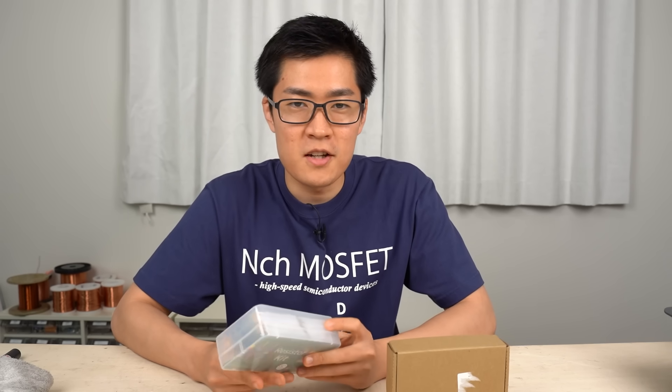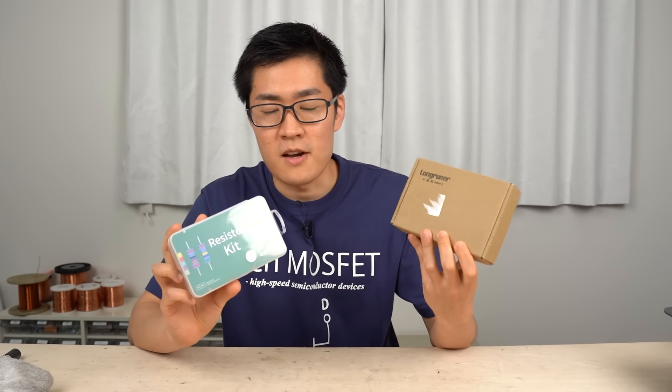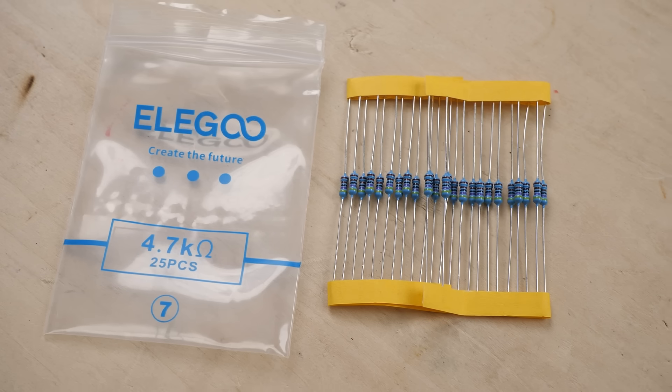Hello. This is the second video of the Electronic Component Research Series. Among electronic components sold on Amazon, I'll look into resistors and check their quality.